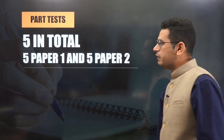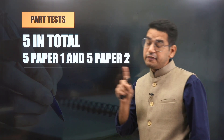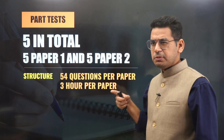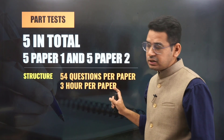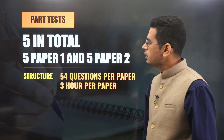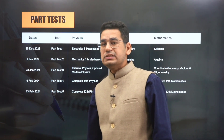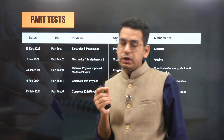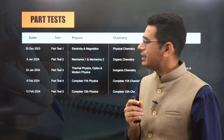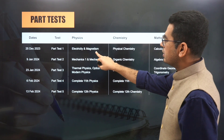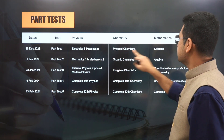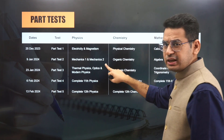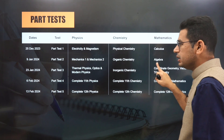Part tests will be 5 in total — that means 5 Paper 1 and 5 Paper 2. The structure will be 54 questions per paper, very similar to what happened in 2022 and 2023. The part tests start from 25th December. Part test 1 consists of Electricity and Magnetism, Physical Chemistry, and Calculus. Part test 2 will be Mechanics 1 and 2 (entire mechanics), Organic Chemistry, and Algebra. And so on for part tests 3 and 4.